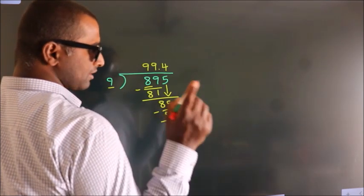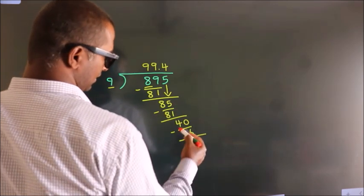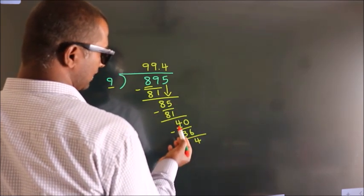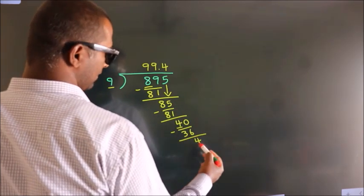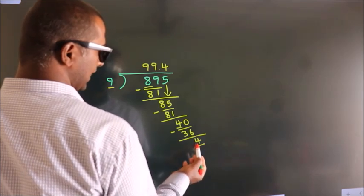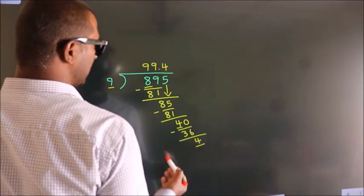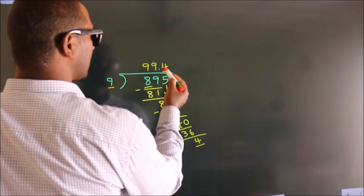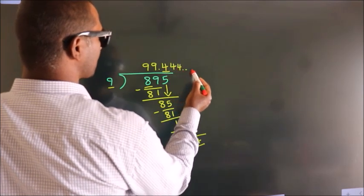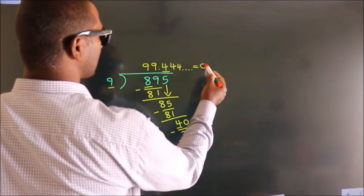Now you observe, we had 4 here and we got 4 again. That means, this number keep on repeating. So this is our quotient.